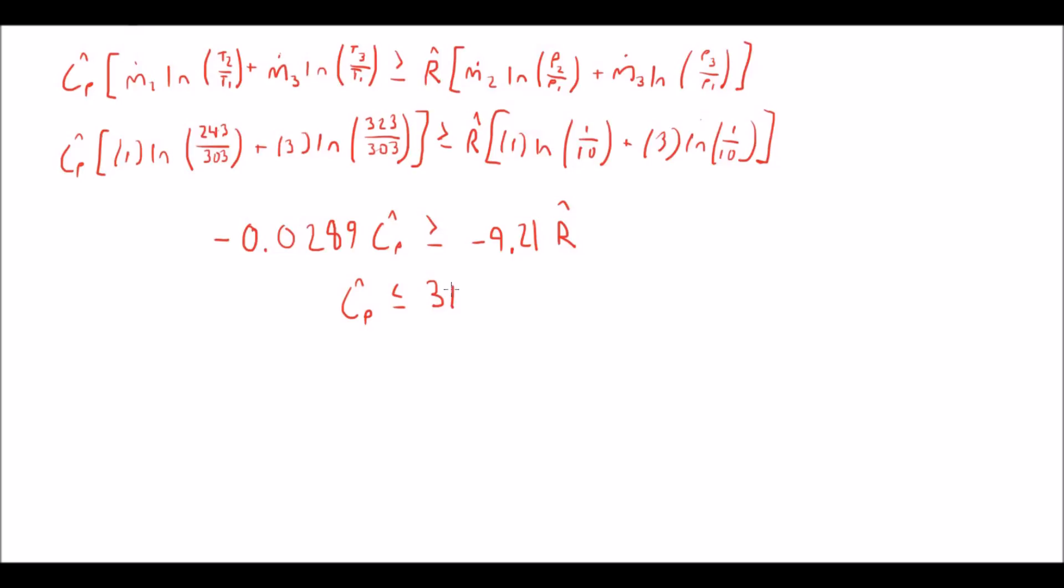Once you solve that out you get that the heat capacity is less than or equal to 318.6 times R. And we also know that for an ideal gas that the constant pressure heat capacity is approximately 5 over 2R. So this is well within the means of the second law. So knowing this that we proved the first and second law to be valid, our final answer for this problem is that yes it can work.